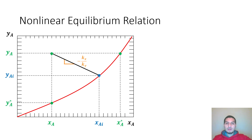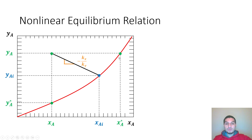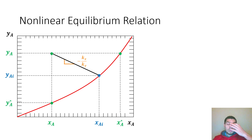The procedure we followed before is not going to be valid here, because in the previous case the slope was constant for all three points — this point, this point, and this point — they were all on the same straight line with the same slope. But in this case, the slope here is different from the slope here, which is different from the slope here, so I cannot unify the equilibrium relation to have the same slope for the three points.